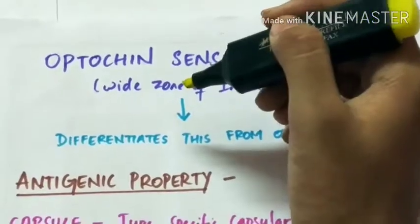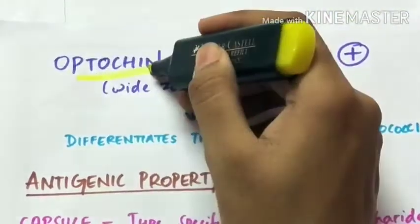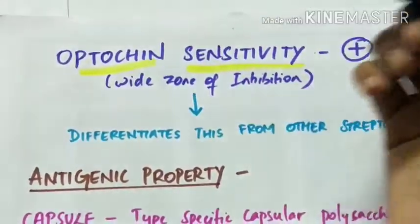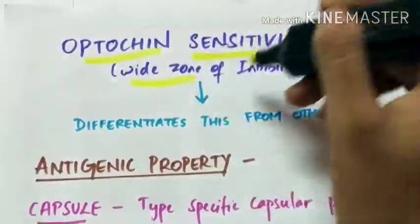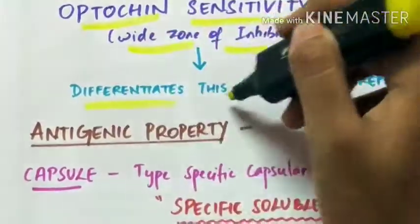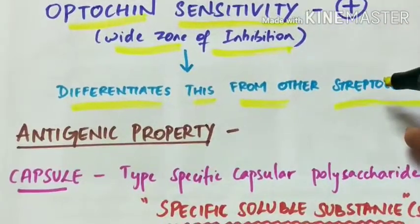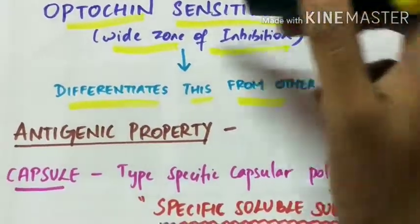Very important point about Streptococcus pneumoniae is they are sensitive to optochin which is an antibiotic. They produce wide zone of inhibition. This property differentiates it from other Streptococcus.